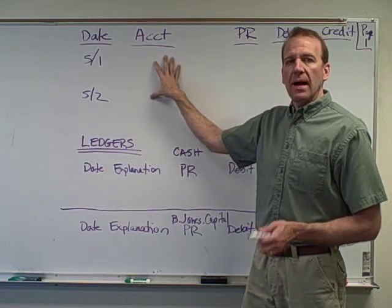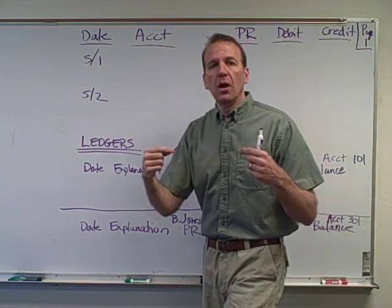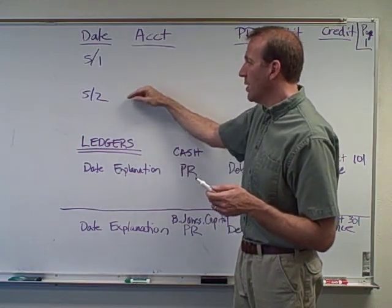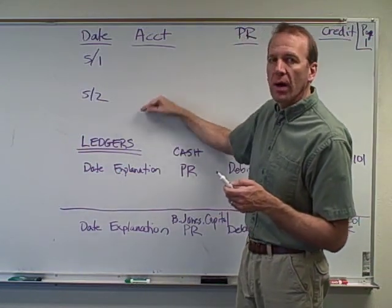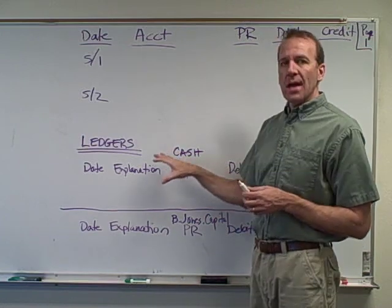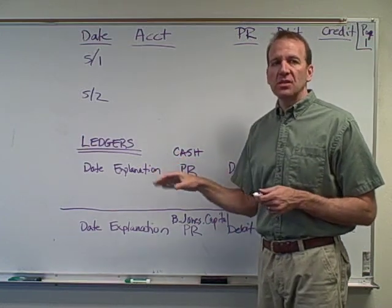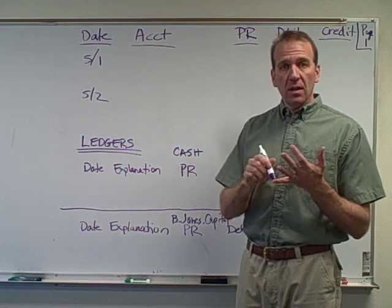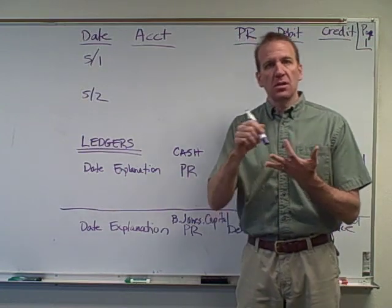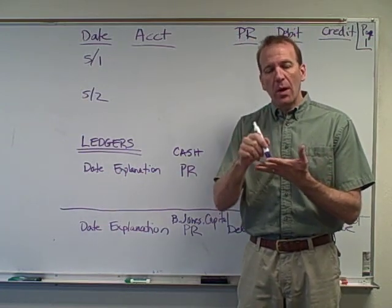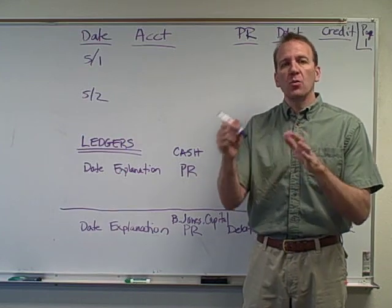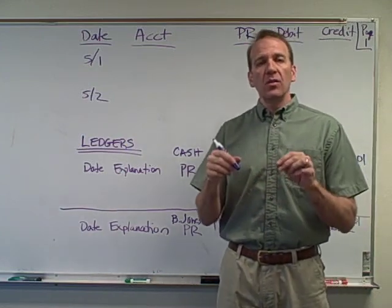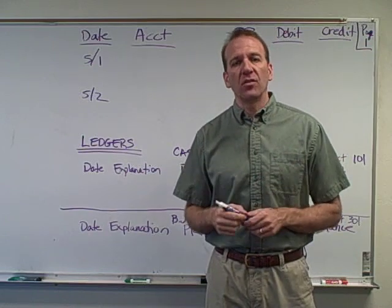The journal keeps a chronological order of all the transactions that take place. All of our journal entries, all of our transactions are put in the journal one right after the other. And then our ledger helps us to track the balance in every single account. So cash has a ledger, accounts receivable has a ledger, supplies has a ledger, equipment has a ledger, accounts payable — all the revenue accounts have their own ledgers. Every single account has its own ledger.